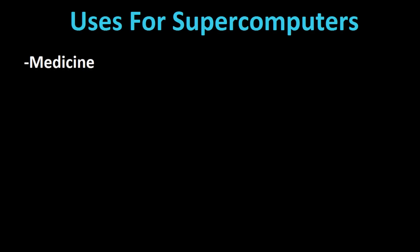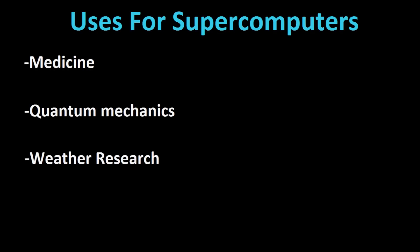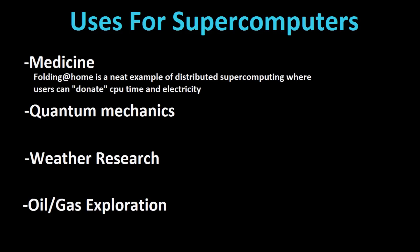Some of the larger fields that use supercomputers include medicine, quantum mechanics, weather research, oil and gas, and exploratory research. In medicine, one popular application is called folding — specifically folding@home, which comes from the simulation of protein folding. You can donate your computing time and power to folding@home, aiding disease research and molecular dynamics research. This was really one of the first ways to donate CPU time, and now Bitcoin allows you to donate computing energy for virtually anything.